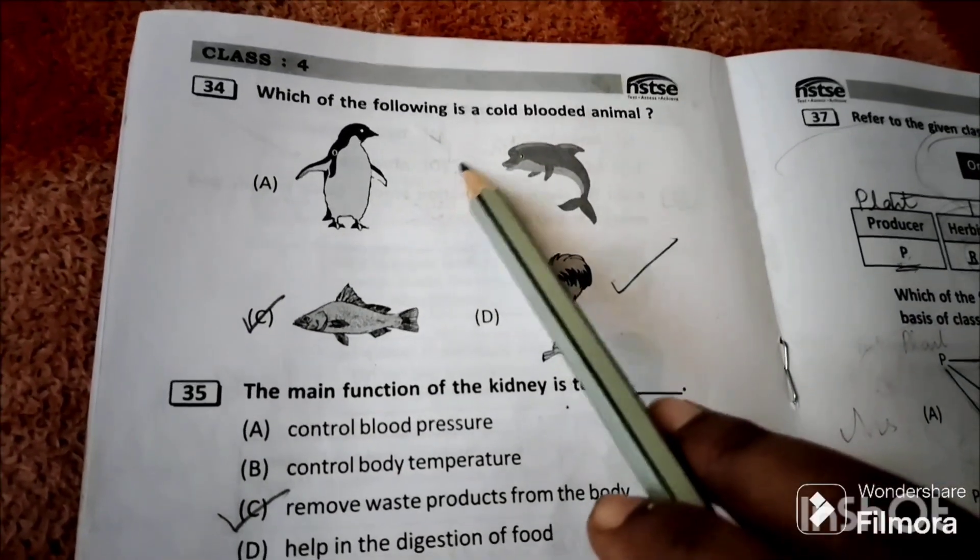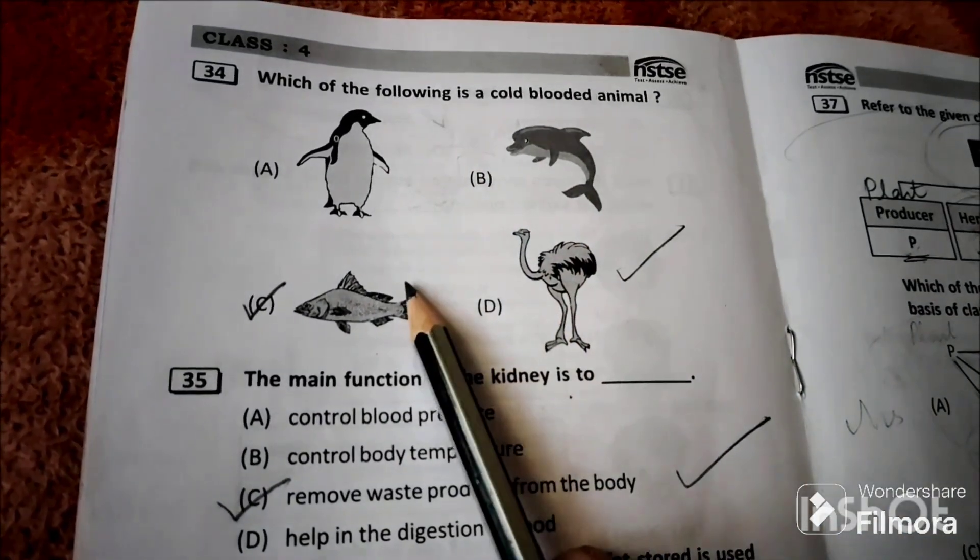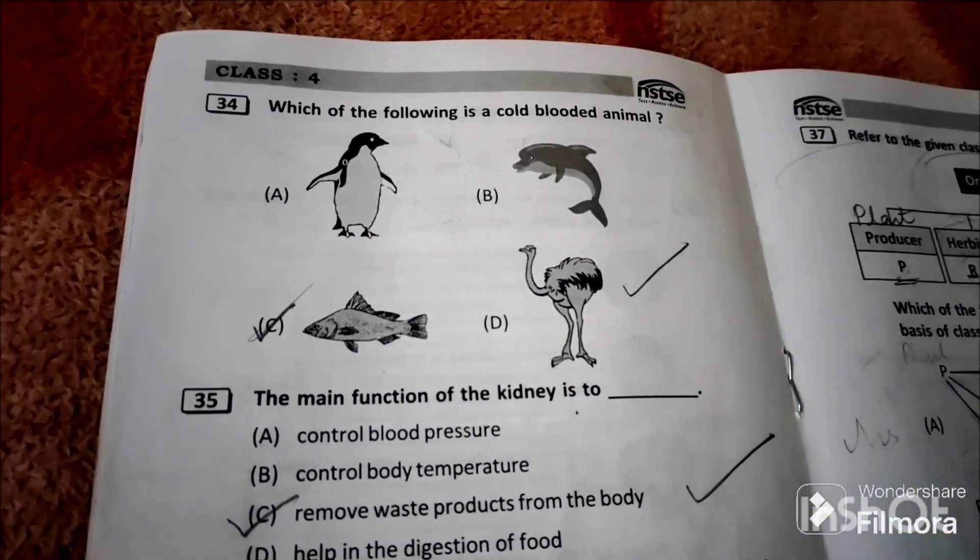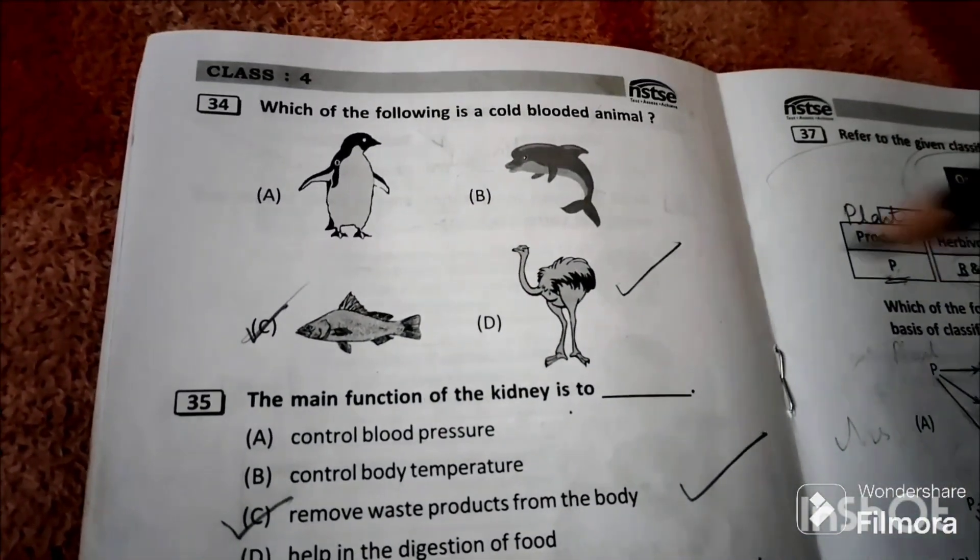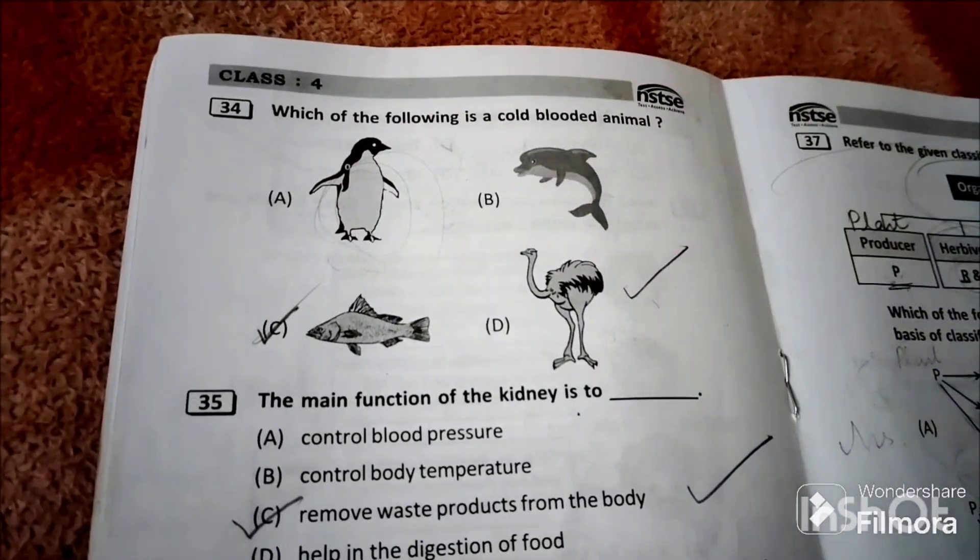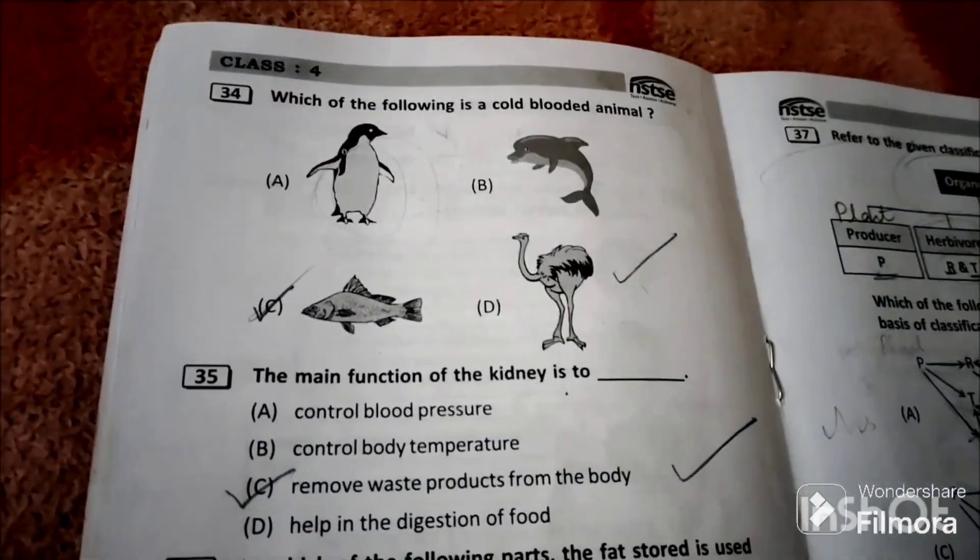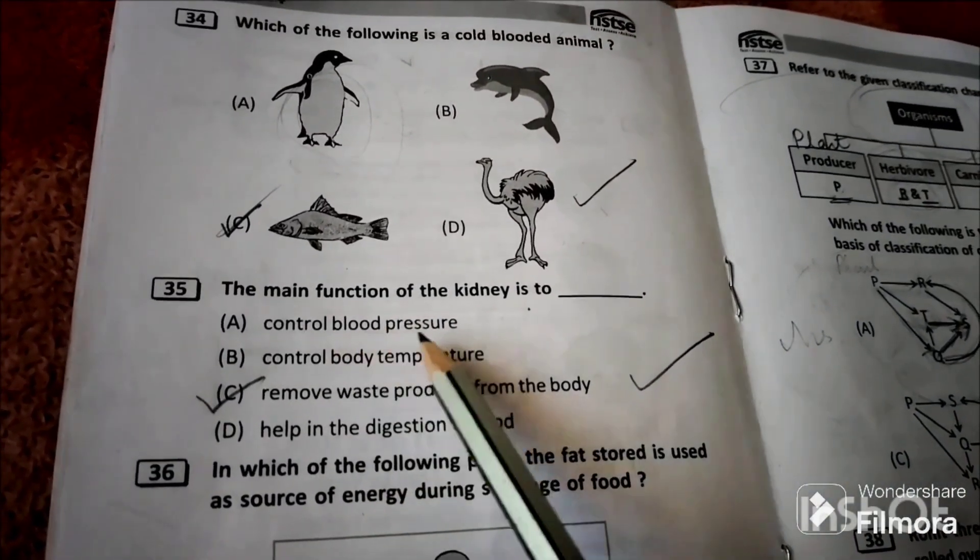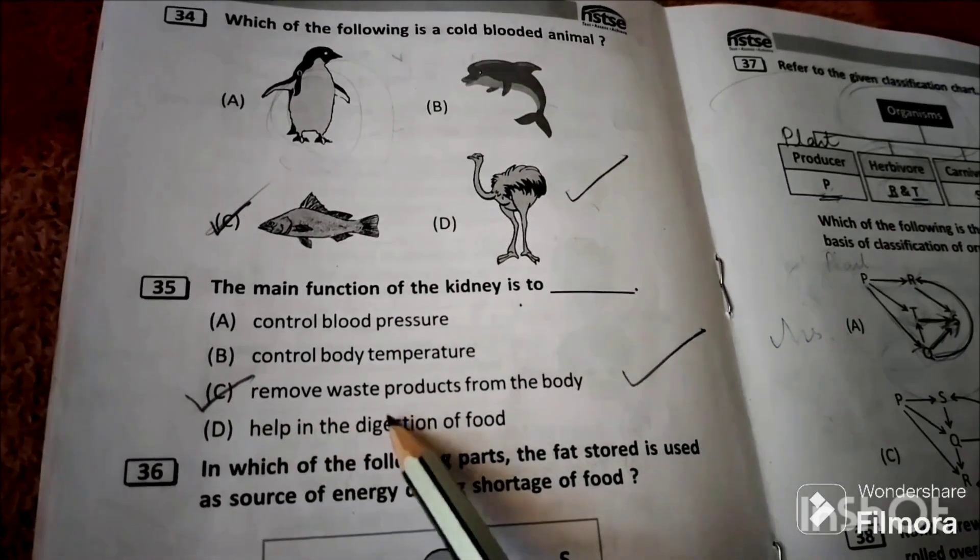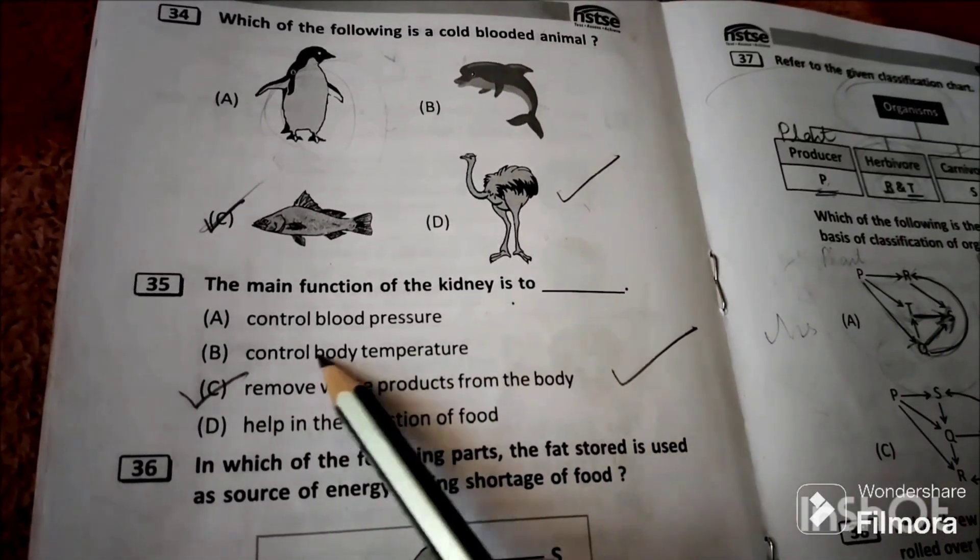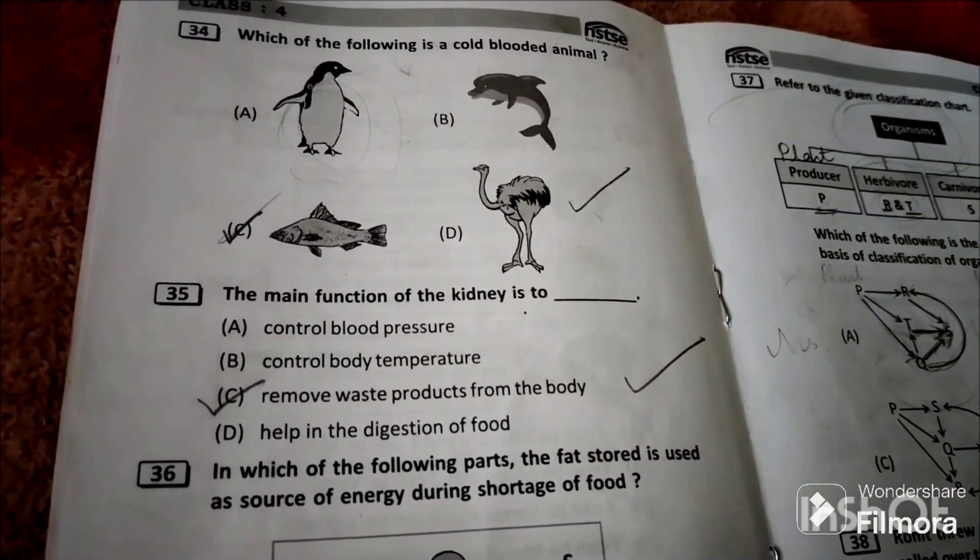Question 34: Which of the following is a cold-blooded animal? Fish. Fish is a cold-blooded animal. Blue whale is a mammal, camel is mammal, and penguin is mammal. These are warm-blooded animals. Question 35: The main function of the kidney is to remove waste products from the body. Control blood pressure no, control body temperature no, helps in digestion of food no.